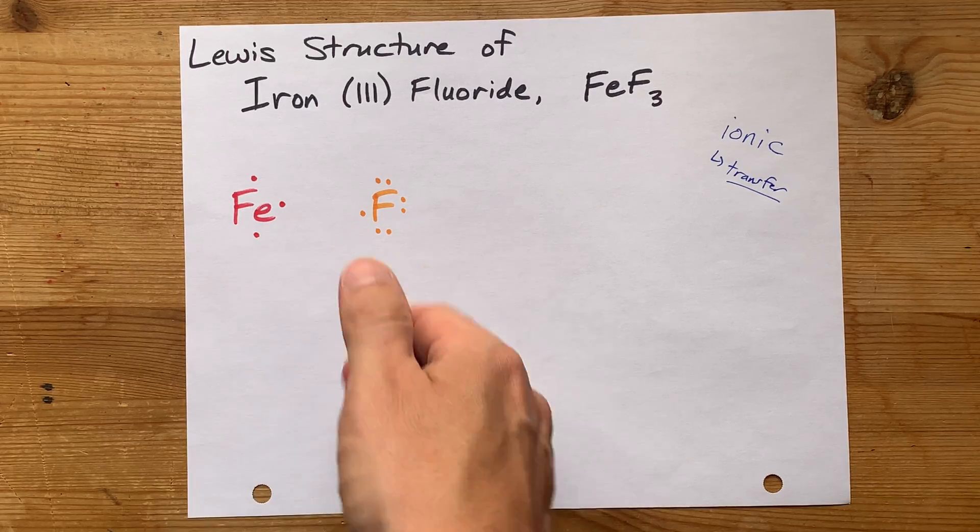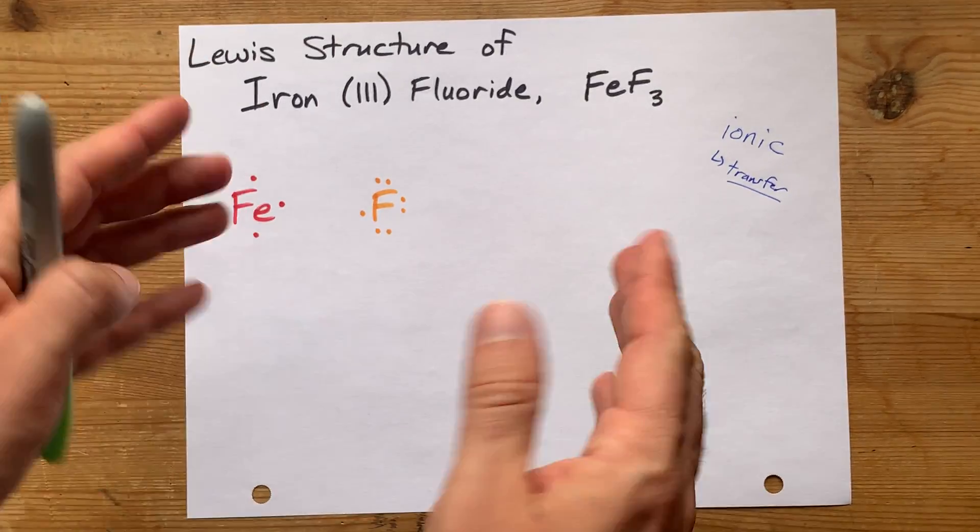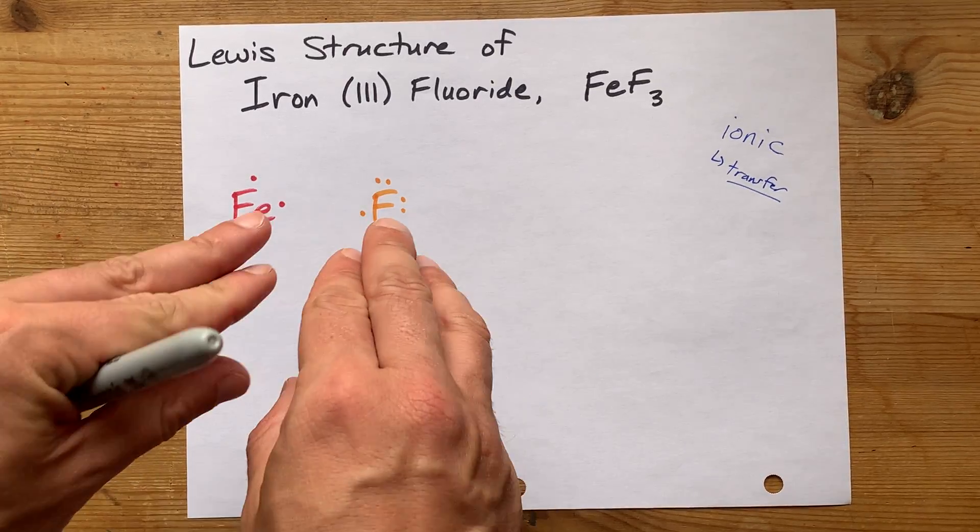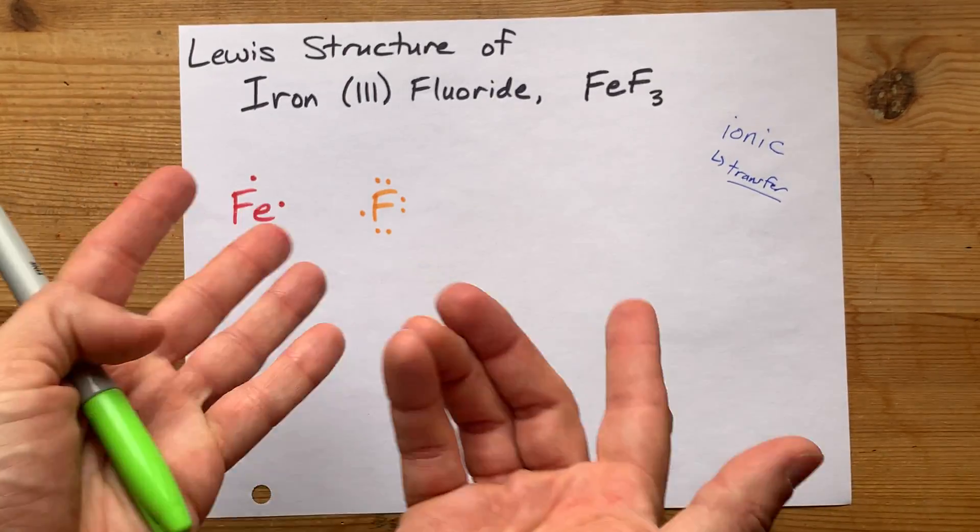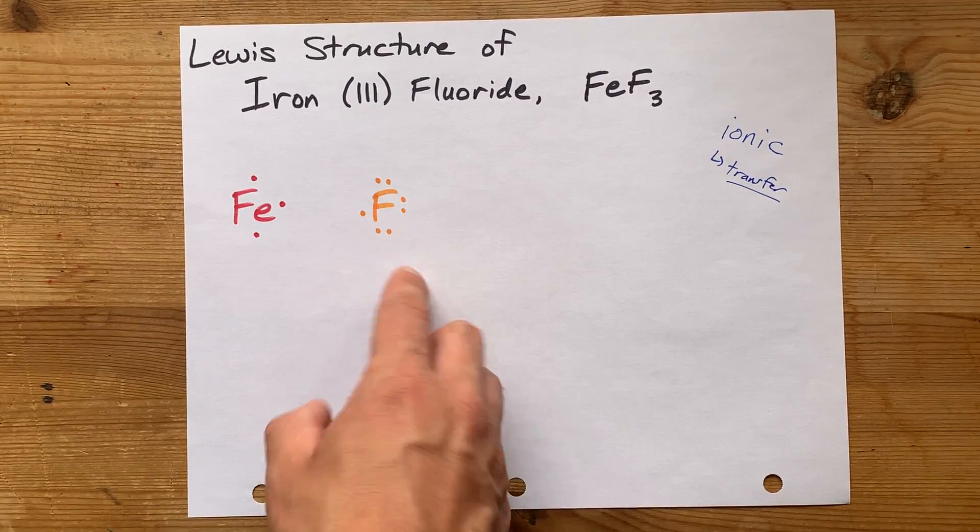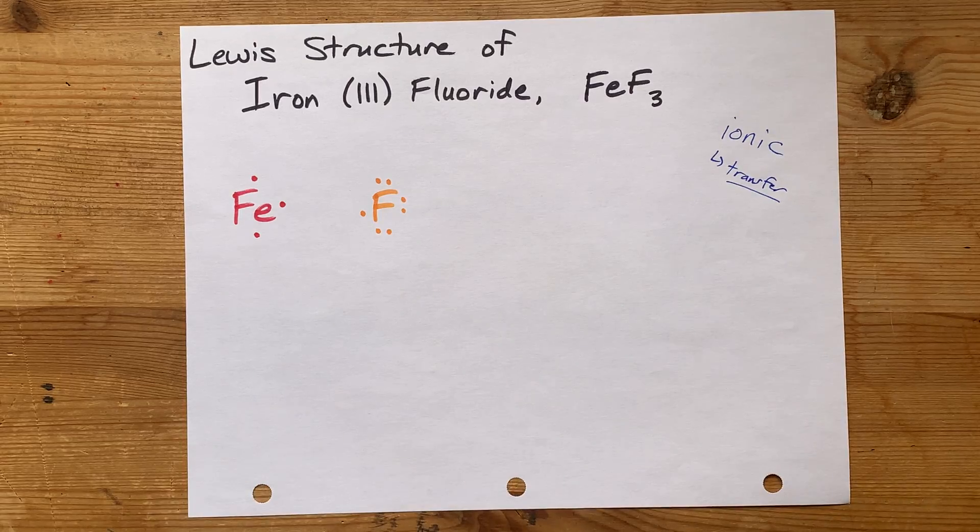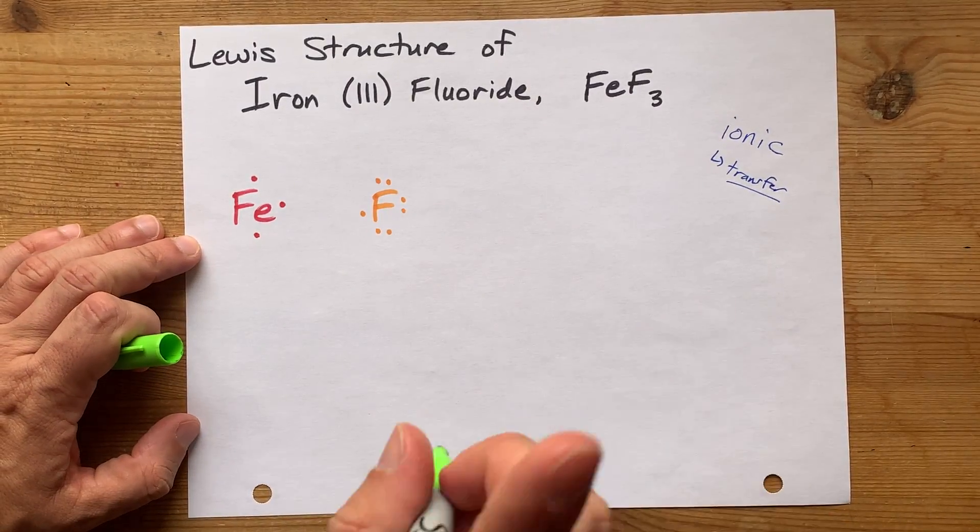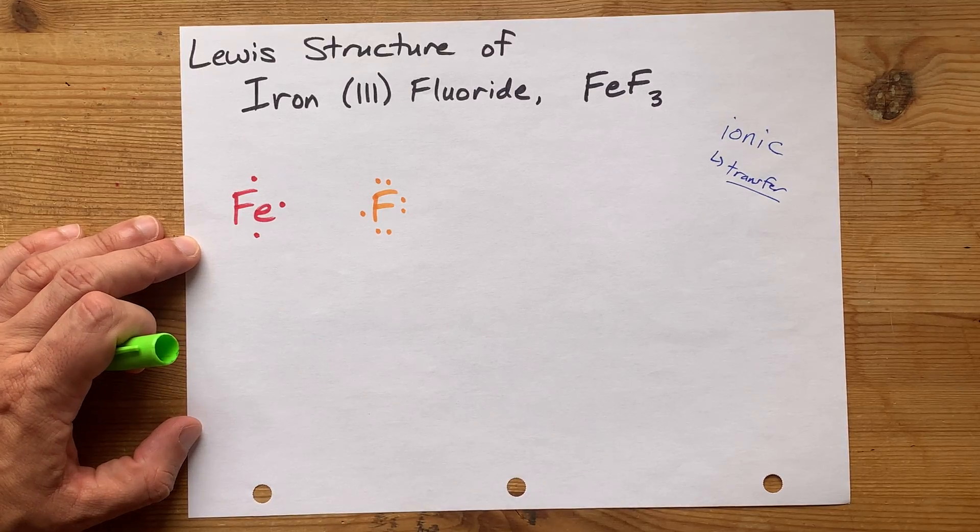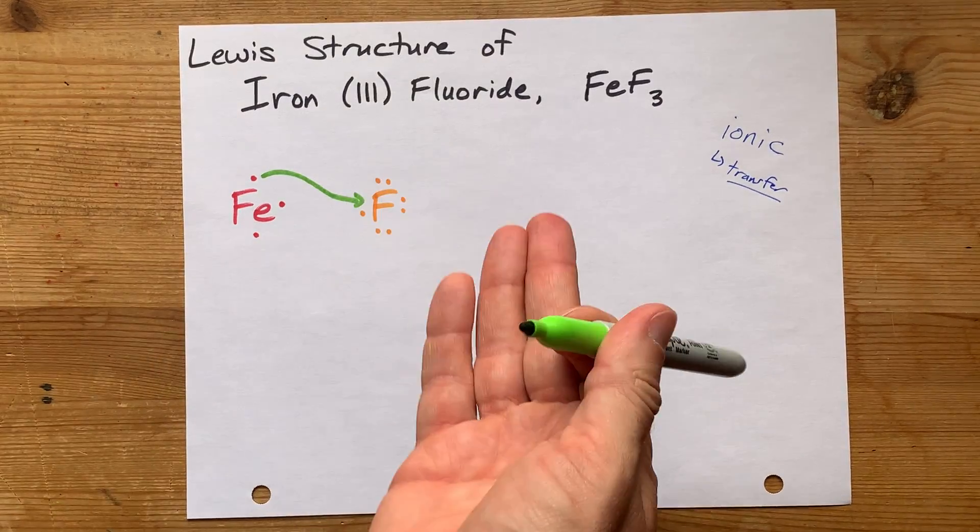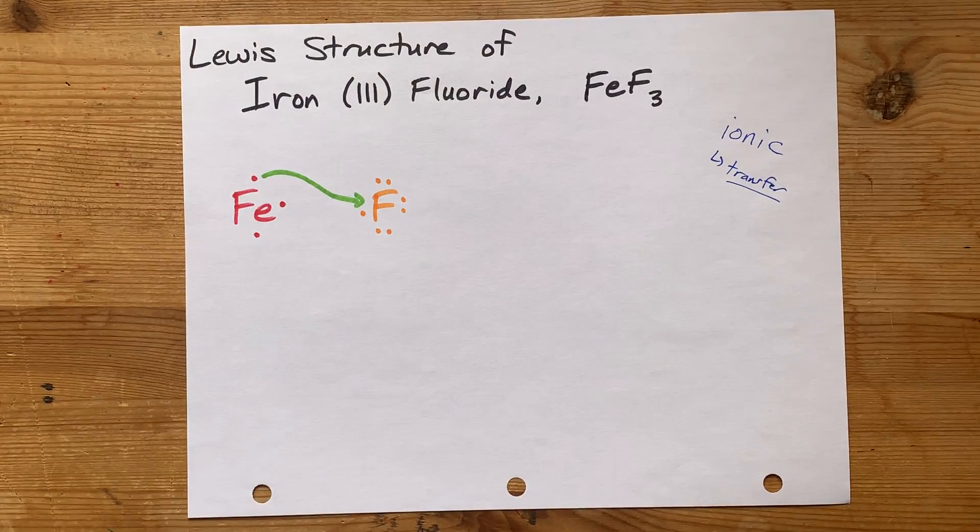The iron, the metal, is going to want to give away all of its valence electrons, and the fluorine, the non-metal, will want to complete its octet. You know the octet rule. The non-metals want a complete shell of eight valence electrons. So, this fluorine, which brought seven, is only one short of stability. It's going to accept one electron from the iron, and now it's a stable fluoride atom.